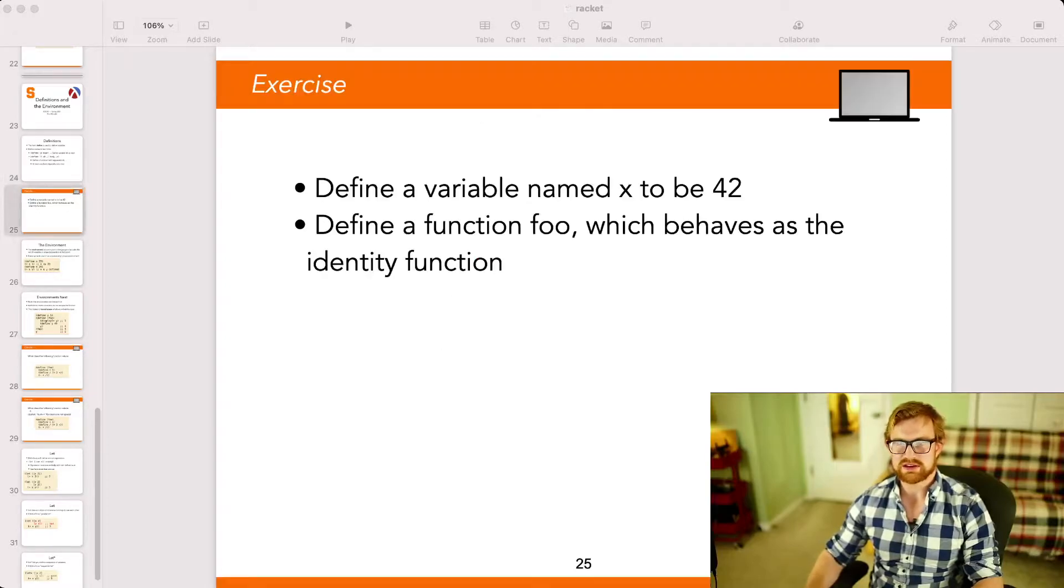So now we get to two exercises. These should both be reviews from last week. The first asks us to define a variable named x to be the value 42. And the second asks us to define a function named foo, which is the identity function.